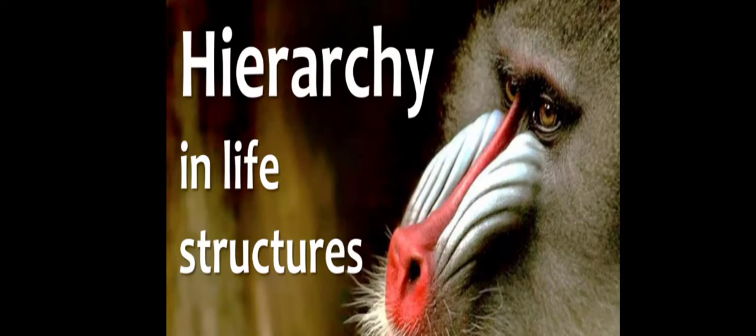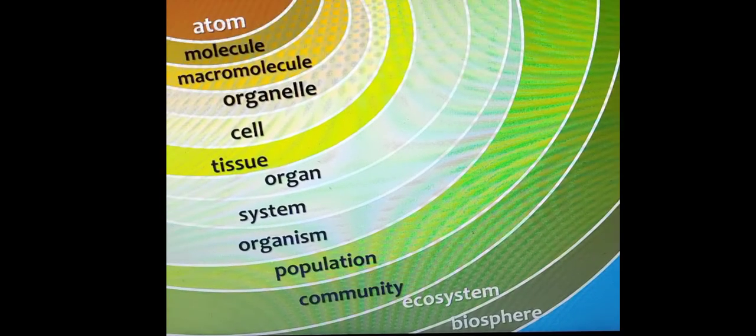Hierarchy means a system or organization that has many levels, from lowest to highest rank. Hierarchy of Life started from a small atom, many atoms join and make a molecule, then macromolecule, organelle, then cell, tissue, organ, organ system, then organism, many organisms make a population, after that community, ecosystem, then biosphere.